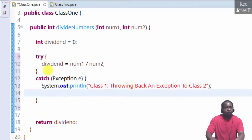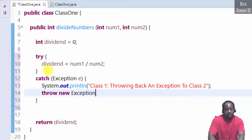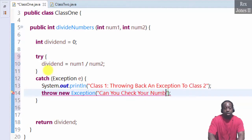At this point, Class One does not know how to handle the data because Class Two is sending data that's causing a problem. Let's re-throw the exception by throwing back an exception to the calling class with the customized message: throw new Exception, can you check your numbers?